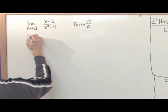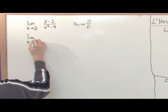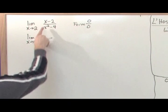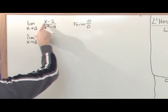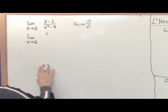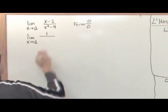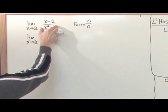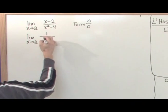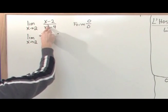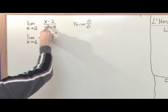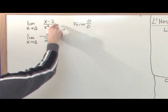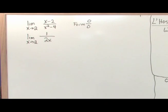So the next step is: limit as x approaches two, because we're approaching the same limit. Now you just take the derivative of the top — the derivative of (x minus two) is just one. Then take the derivative of the bottom — the derivative of (x squared minus four) is two x, from your basic power rule. The constants drop away, giving you one over two x.